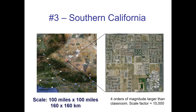As we do our next jump, we're now at a hundred miles by a hundred miles, which also happens to be 160 kilometers across. Our next jump took us to a very significant chunk of Southern California — Victor Valley's on the right-hand side, we're almost to Santa Barbara on the left, downtown LA's at the bottom, and Bakersfield's in the upper left. We are four orders of magnitude larger than the classroom — that's a scale factor of 10,000.